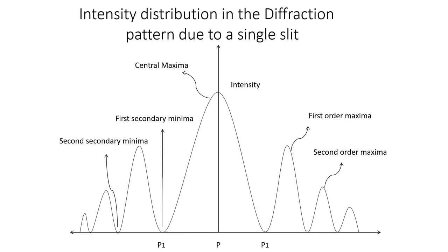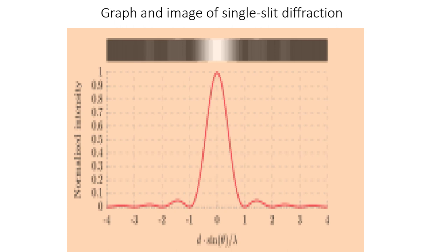This diagram shows the intensity distribution in the diffraction pattern due to a single slit. At the center of the screen, you will get a bright band of maximum intensity, called the central maxima or zeroth order maxima. On either side of the central maxima, we have first order, second order, and third order maxima of decreasing intensity. In between the maximas, we have the first secondary minima, then the second secondary minima, and so on. It is quite obvious that the intensity of the central maxima is very high compared to the intensities of the other maxima.